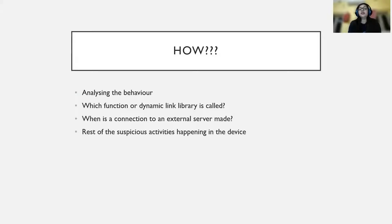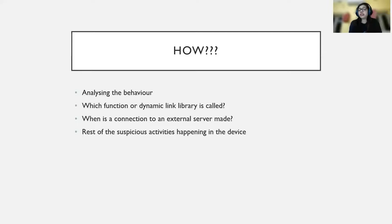We are trying to understand what kind of connection it is making to an external server — either connecting to a malicious link trying to download other malicious files into your system, or connecting to a C&C server (command and control server) as discussed in previous videos. We analyze how and when it is making those connections, along with other suspicious activities happening in the device.